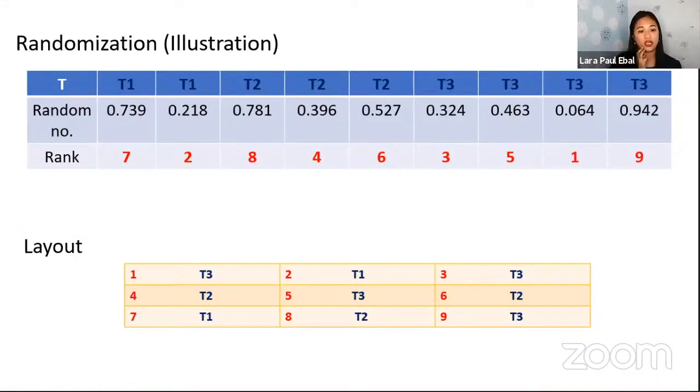So as you can see here in the illustration, having three levels: T1, T2, T3. And take note that T1 is assigned to how many replicates? Two, so we have T1, T1 here. And then T2 is assigned to three replicates, so we have three, right? That's why we have T2, T2, T2. And then for T3 we have four replicates, so we have four T3s. So we generate random numbers. This one has rank one, and the second to the last lowest, which is 0.218, has rank two, so the lowest generated random number.